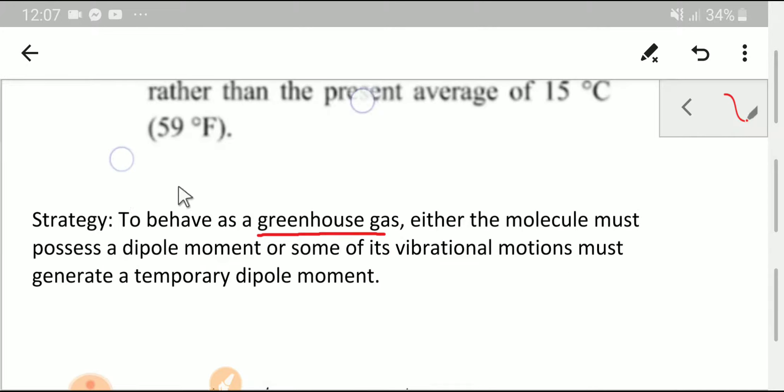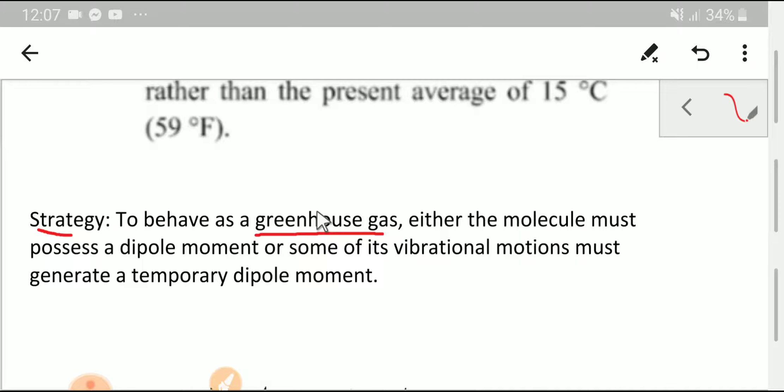So what is the strategy to be a greenhouse gas? Either the molecule must possess a dipole moment, or some of its vibrational motions must generate a temporary dipole moment.